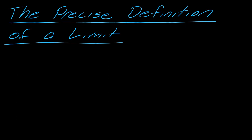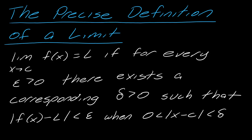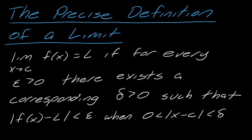Now I can show you the precise definition of a limit. This says: the limit as x approaches C of f of x equals L if for every epsilon greater than 0 there exists a corresponding delta greater than 0 such that the absolute value of f of x minus L is less than epsilon when 0 is less than the absolute value of x minus C, which is less than delta. So what the heck does this mean?